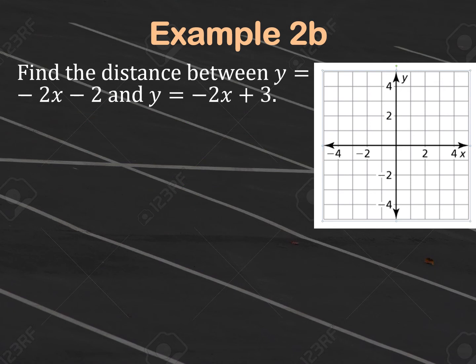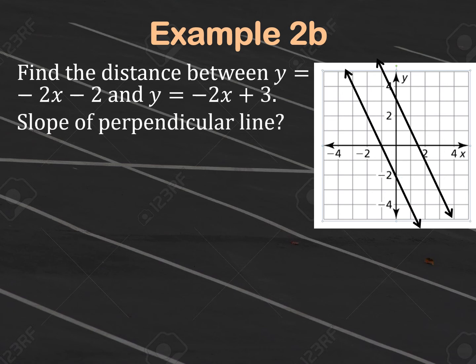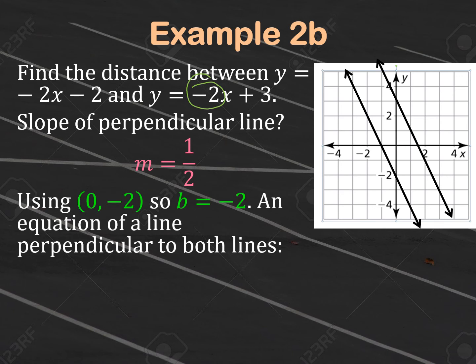Example 2B: Find the distance between y = −2x − 2 and y = −2x + 3. Graph both lines: the first has y-intercept −2 and slope −2 (go down 2, right 1); the second has y-intercept 3 with the same slope. Next, find the slope of the perpendicular line: the original slope is −2, written as −2/1; flip it and change the sign to get 1/2. Using the y-intercept (0, −2) from the left line, the equation of the red perpendicular line is y = 1/2 x − 2.